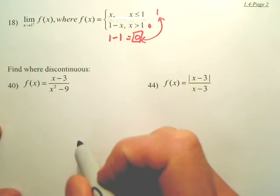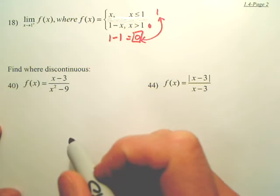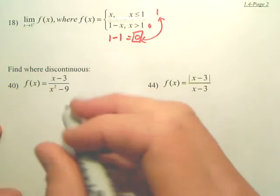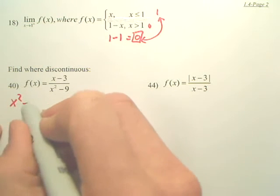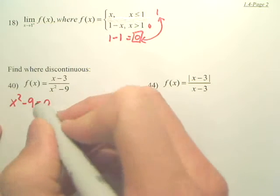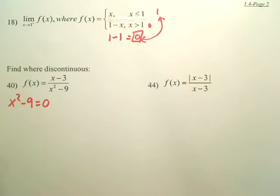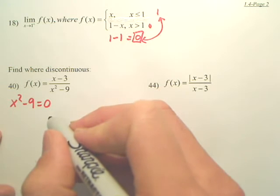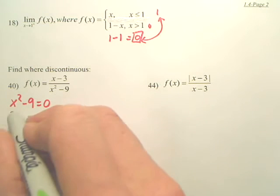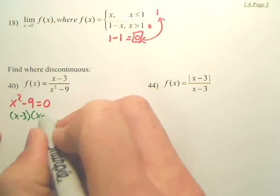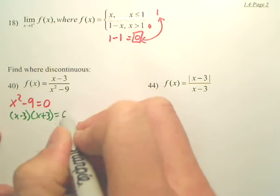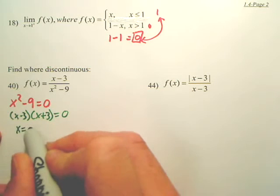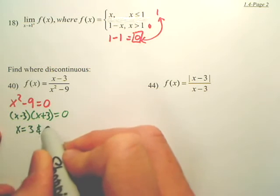Where is it discontinuous? The way you find discontinuities, all you do basically is look at the denominator, set it equal to 0. Discontinuities are where the bottom equals 0. Because you cannot have a 0 in the denominator. When I solve this, there's two ways. I'm basically going to do the factoring method.